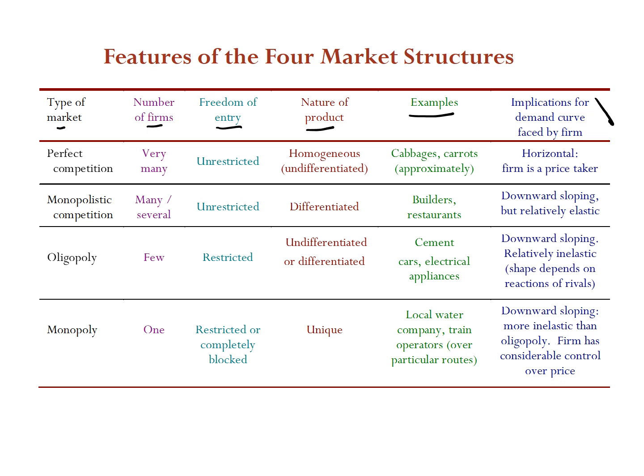The first type of market is perfect competition, which we've been discussing for a while. A typical example is a market square where everybody sells the same product at the same quality. The assumption is that there are very many firms, and because of that you'll find out they are price takers. Freedom of entry is completely unrestricted.